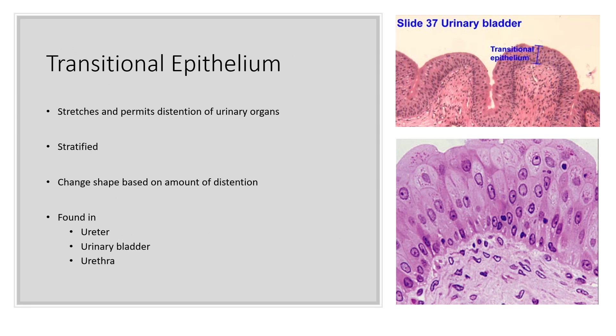There's also transitional epithelium. This type allows for distension of certain organs. You can find this in the urinary bladder — when it fills up with urine, the bladder stretches, and when emptied, it contracts — so it needs tissue that can permit that distension. Transitional epithelium is stratified and can change shape based on the amount of distension. You find this in most urinary organs such as your ureter, urinary bladder, and the urethra.